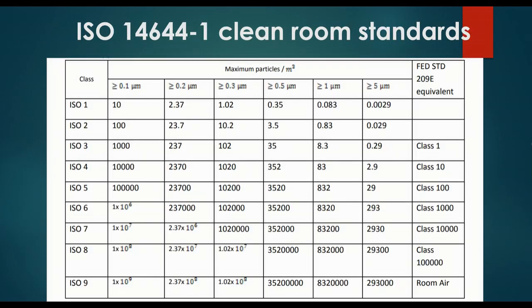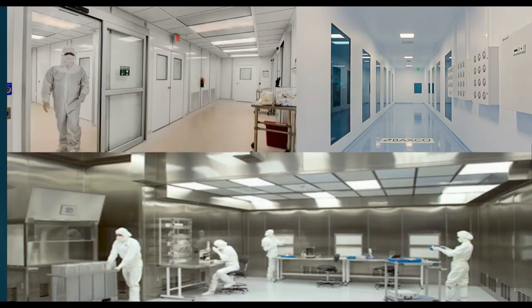Here are the clean room standards. The ISO classes range from ISO 1 through 9. The table shows the maximum particles per cubic meter for particle sizes greater than 0.1 micrometer, 0.2 micrometer, 0.3 micrometer, 0.5 micrometer, 1 micrometer, and 5 micrometer.